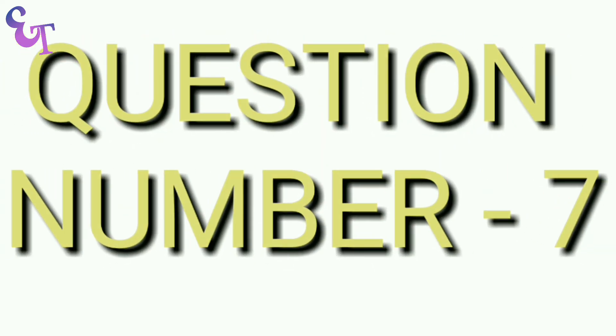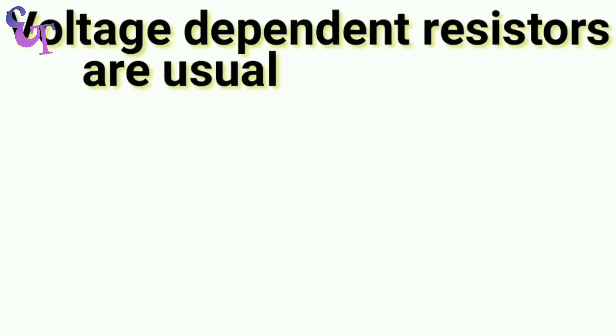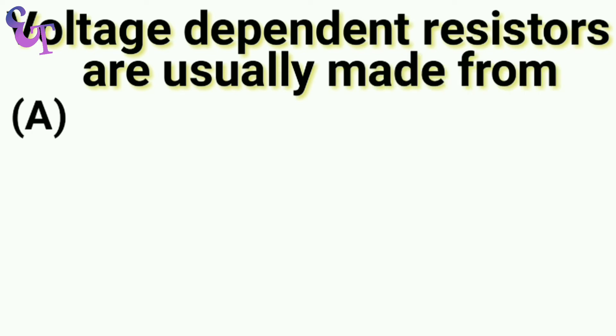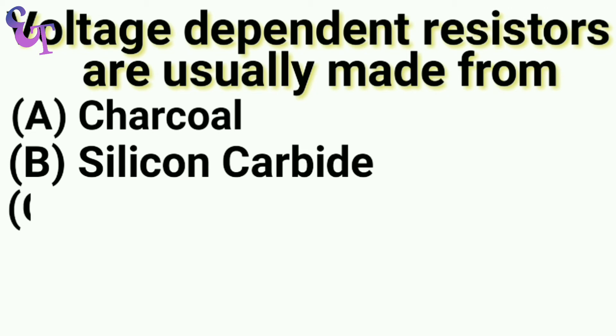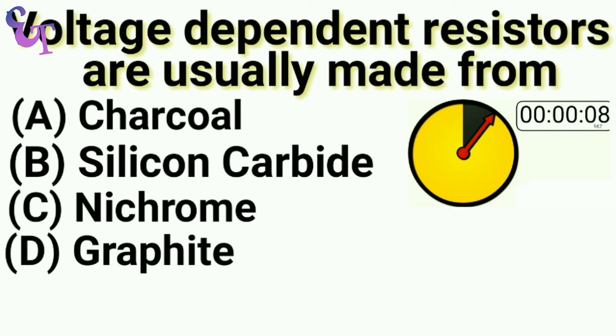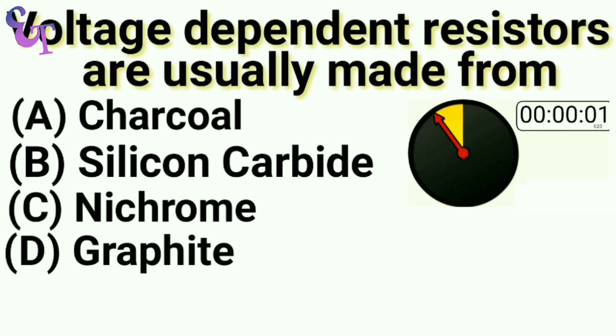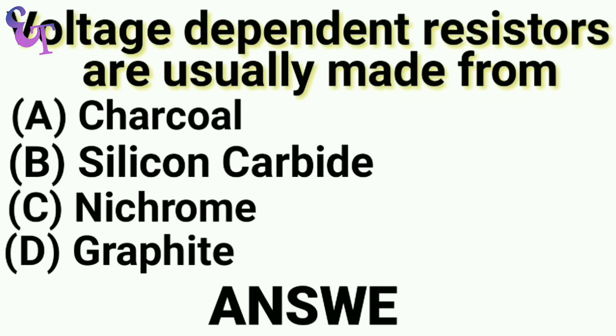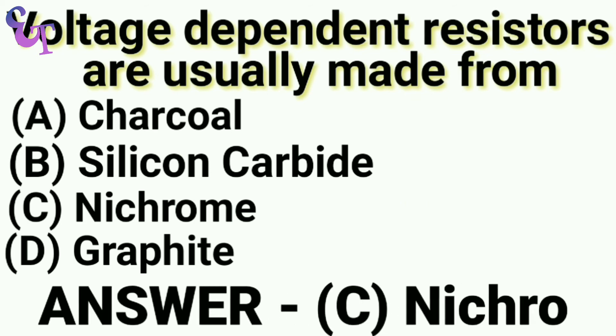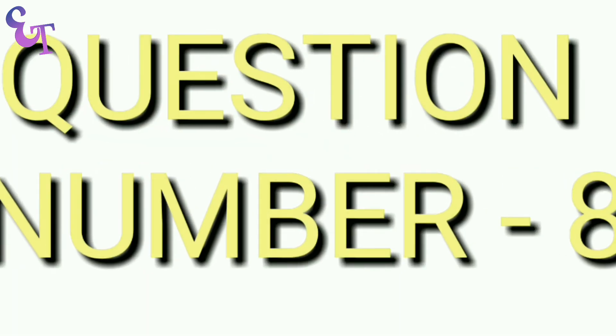Question number 7: Voltage dependent resistors are usually made from A. Charcoal, B. Silicon carbide, C. Nichrome, D. Graphite. The right answer is C. Nichrome.